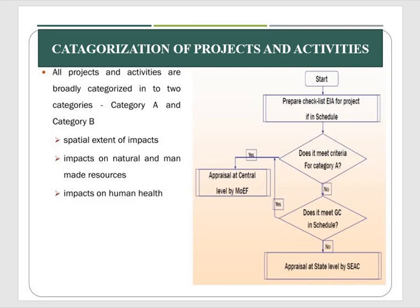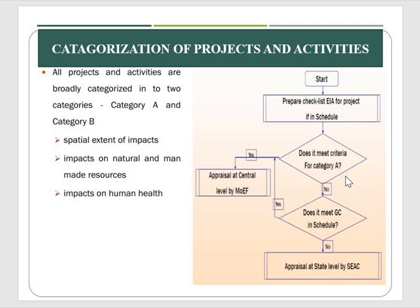Categorization of projects and activities: whatever the project or activity may be, it is broadly classified into two categories — Category A and Category B. Categories are based on the spatial extent of impacts, the impacts on natural and man-made resources, and the impacts on human health. If a project meets the criteria for Category A, assessment is done at the central level. If not, it falls under Category B and appraisal is done at the state level.